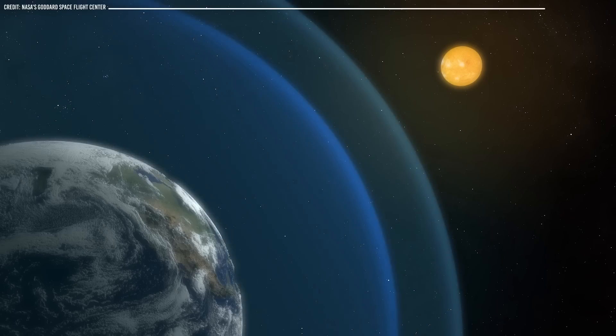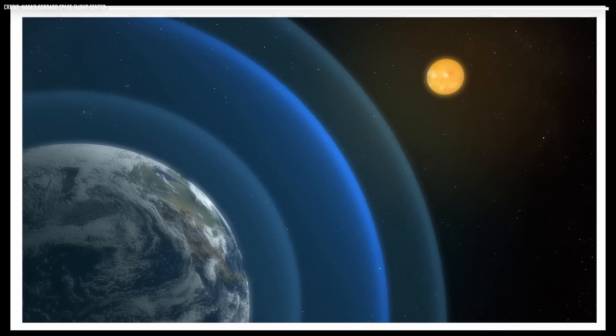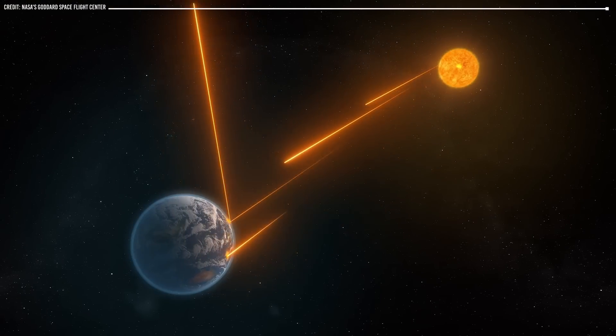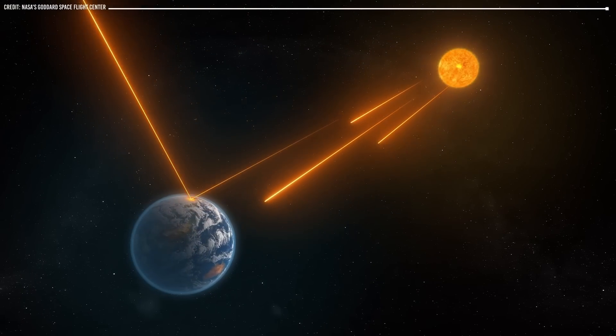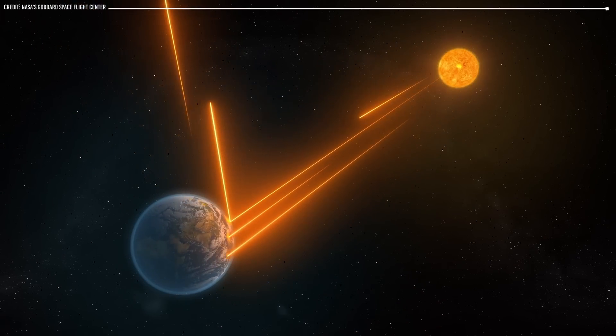The atmosphere on Earth also contains a protective layer of ozone, which helps to block harmful ultraviolet radiation from the sun. This protection is crucial for life to survive on the planet's surface, as high levels of UV radiation can cause DNA damage and other harmful effects.